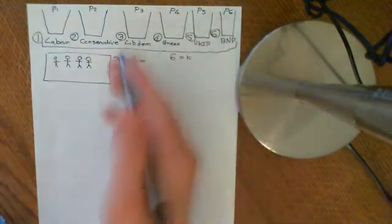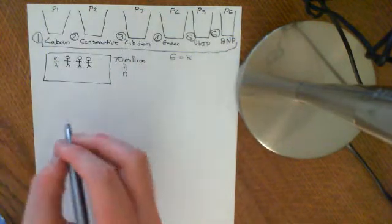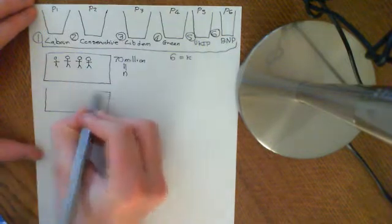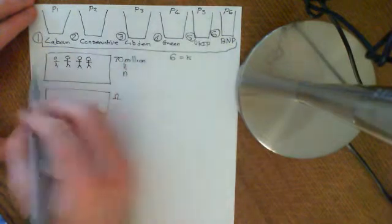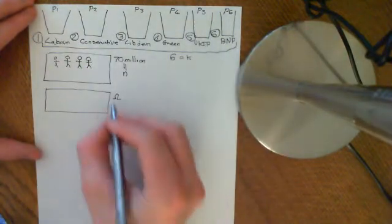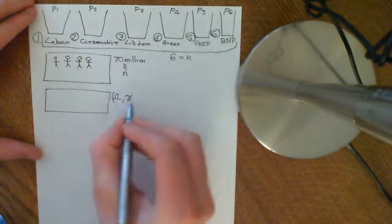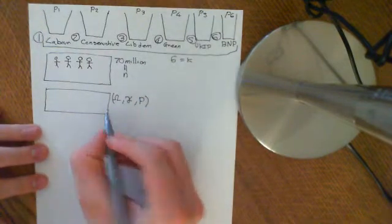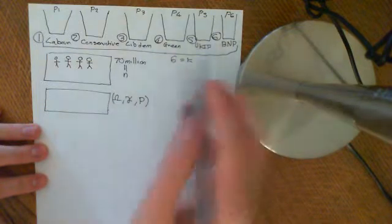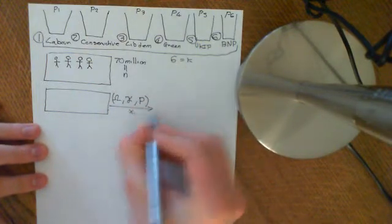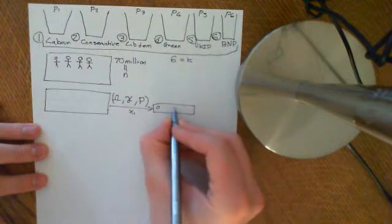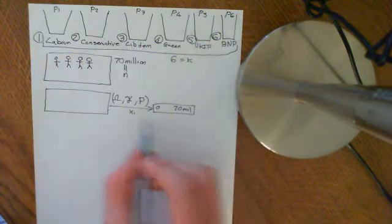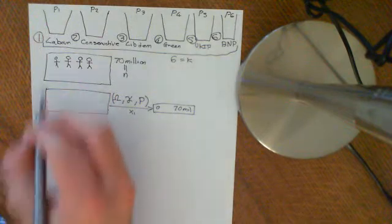So we could write a multinomial distribution for this. We can have all possible outcomes in this probability space — all possible outcomes of how you can ascribe these 70 million people into these six baskets. And that will be a finite, discrete probability space. So we can then ascribe six random variables: x1, which ascribes a number between zero and 70 million to each outcome — it gives you basically the number of people who voted Labour, the number of people in basket one.